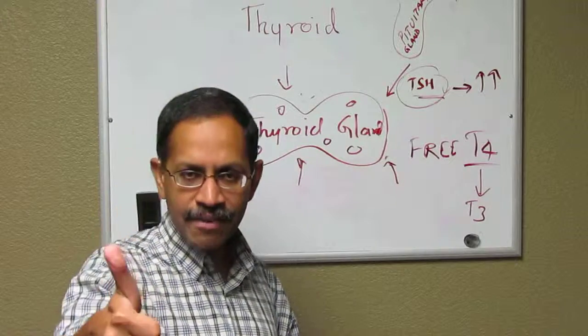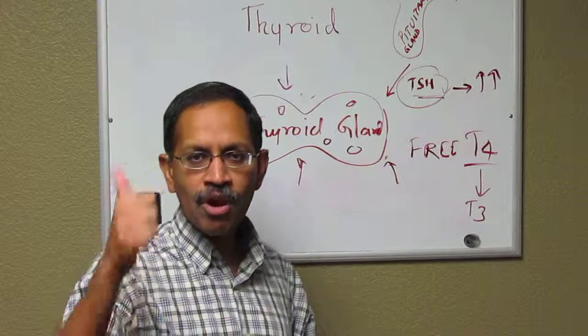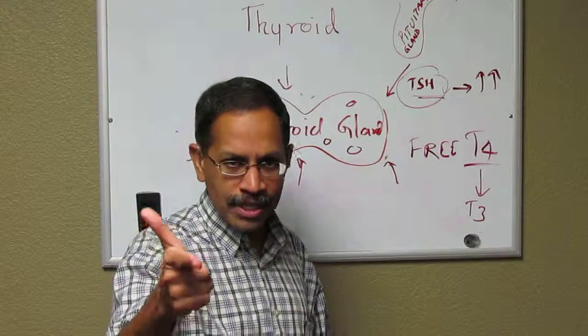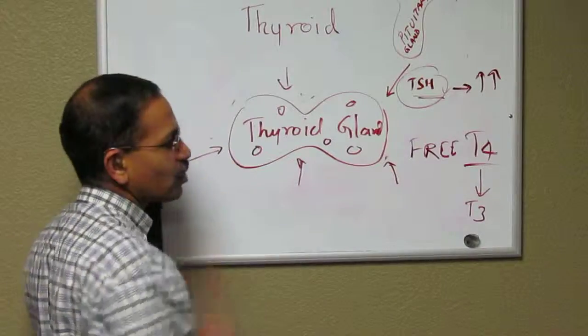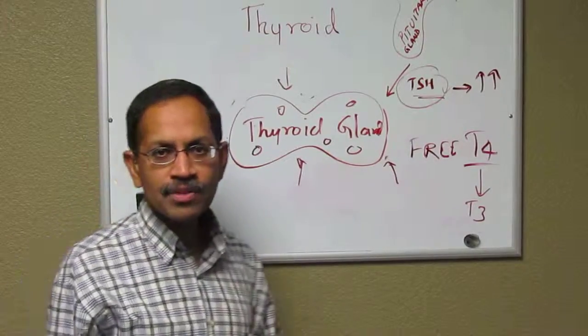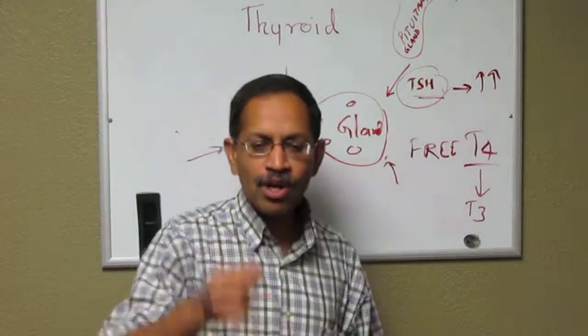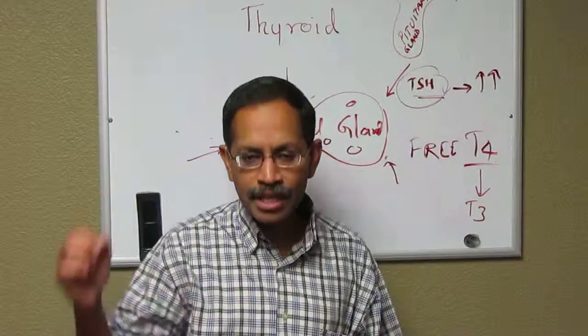So Graves' disease will have a high free T4, a low TSH, with thyroid antibodies, which are called thyroid stimulating immunoglobulin.